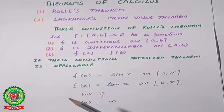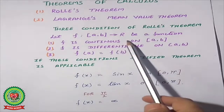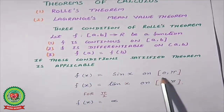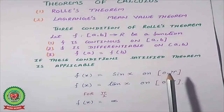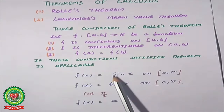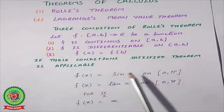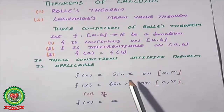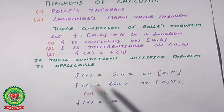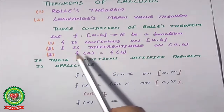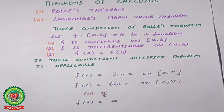Let me take an example to understand continuity and differentiability. Take f(x) = sin(x) on the interval [0, π]. If we substitute any value including 0 and π, a sin value exists — so it is a continuous function. After differentiation, the derivative is cos(x), which also gives an answer for values between 0 and π. And sin(0) = 0, sin(π) = 0, so the third condition is also satisfied. Rolle's theorem is applicable here.